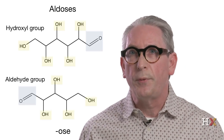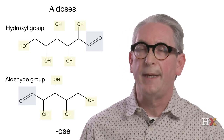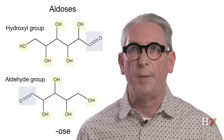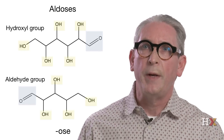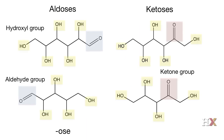When the carbonyl group is anywhere else in the molecule, we have a ketone group, and the sugar is called a ketose. In all natural sugars, the ketone group is carried by carbon-2. In this case, usually the name of the sugar ends in "-ulose" — for example, ribulose.